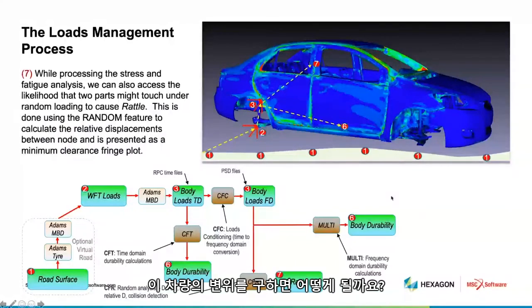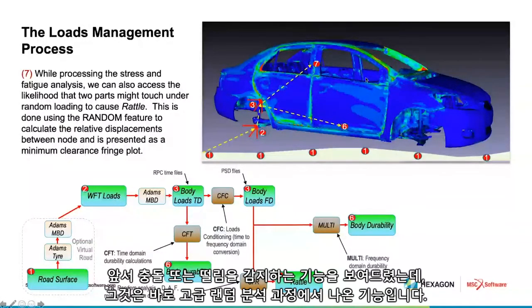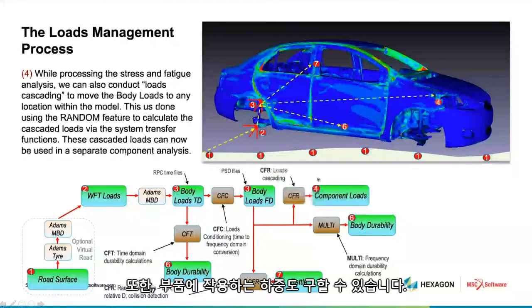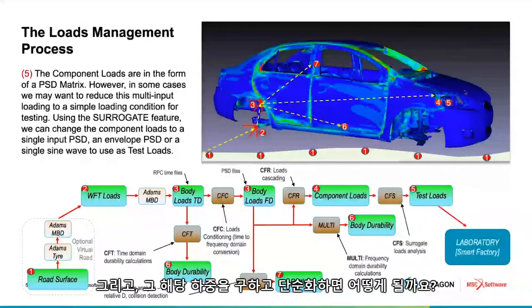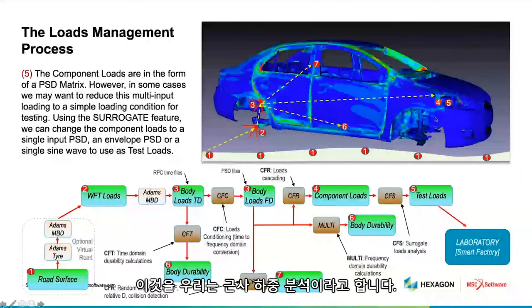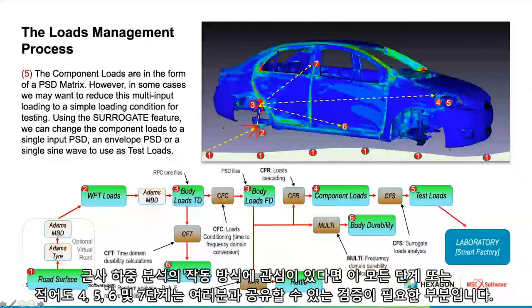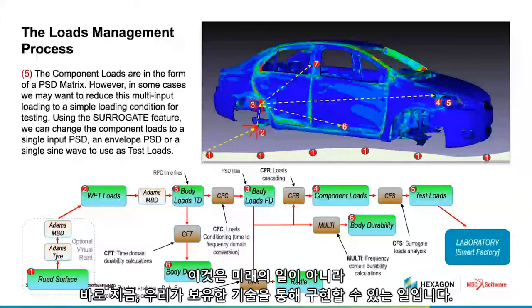We can go beyond body durability. We can ask for the displacement response on the vehicle — the ability to do collision detection or rattle — which comes from the advanced random analysis procedure. We can also ask for component loads: what happens if we push loads up to the battery compartment and represent them at that location, then reuse them — that's what we call loads cascading. And then what happens if we take those loads and simplify them — that's what we call surrogate loads analysis. Steps four through seven are test problems we can share with you if you're interested. This isn't something in the future — this is what we can do today.